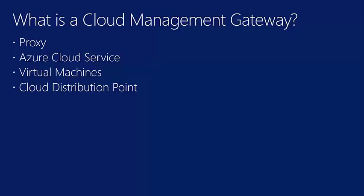If you need more than 96,000 clients using the CMG, it is possible to install more than one Cloud Management Gateway. The virtual machines hosted in Azure are small — currently A2 class VMs — and you have control over how many you deploy. Also, the Cloud Management Gateway can now serve as a cloud distribution point, so you can combine both into one deployment.